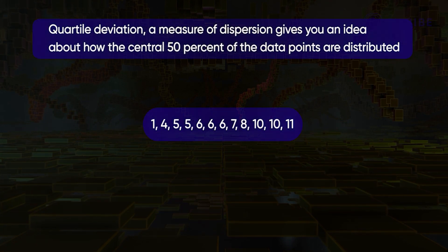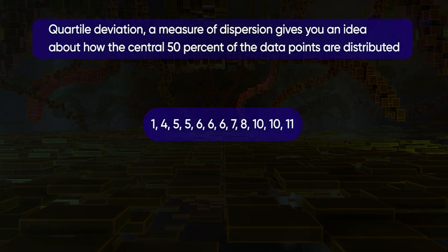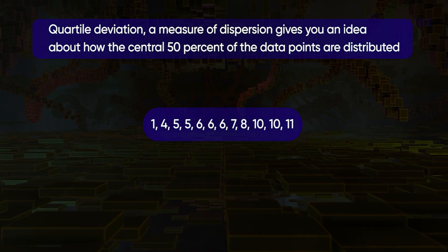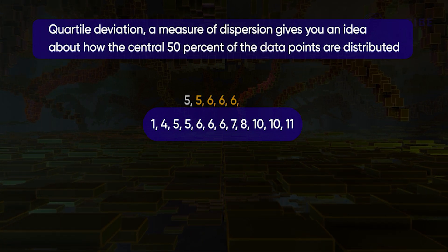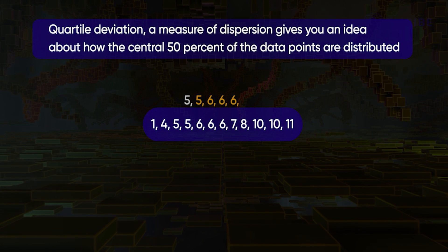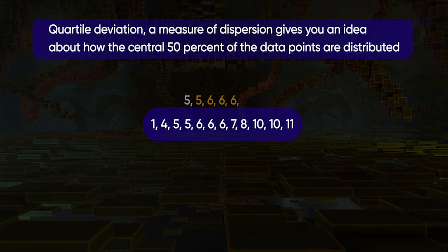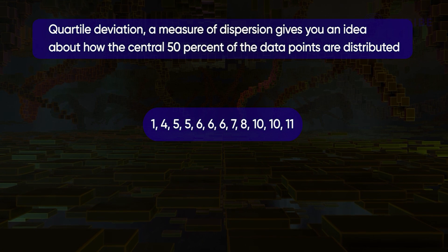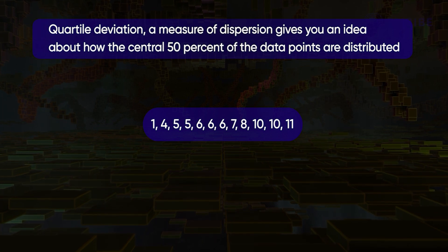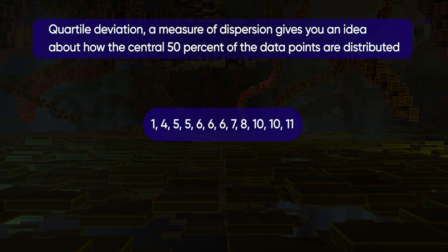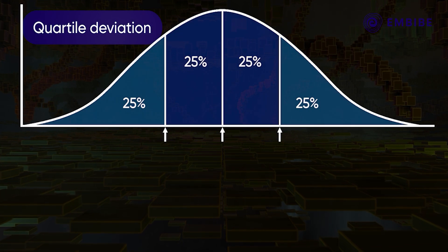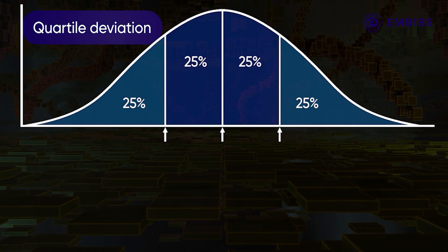Quartile deviation, a measure of dispersion, gives you a range within which the central 50% of the data points are distributed. Before getting into the details of the calculation, let us understand what quartiles are. Let us consider there are n data points in a data set.